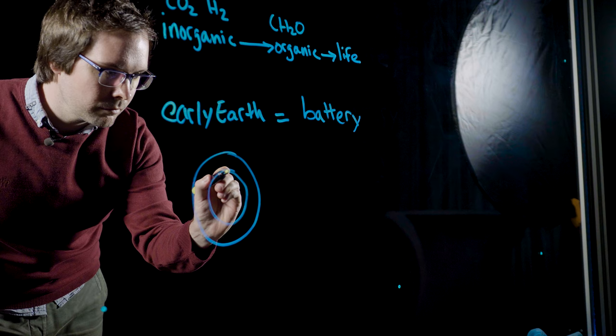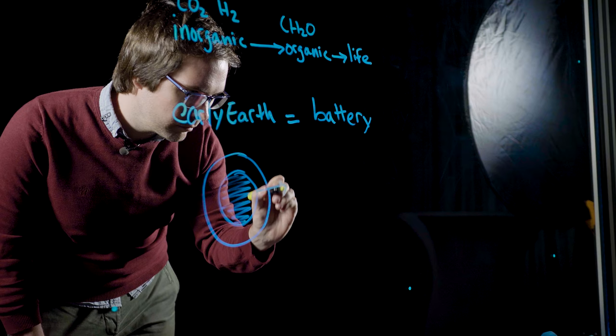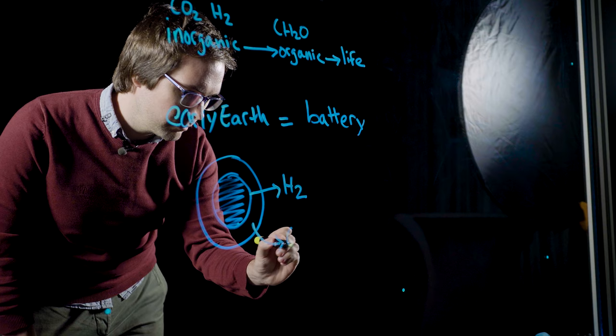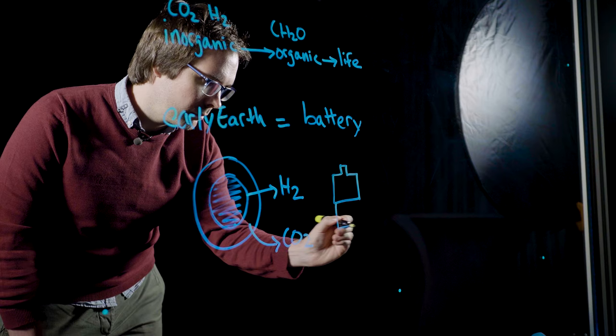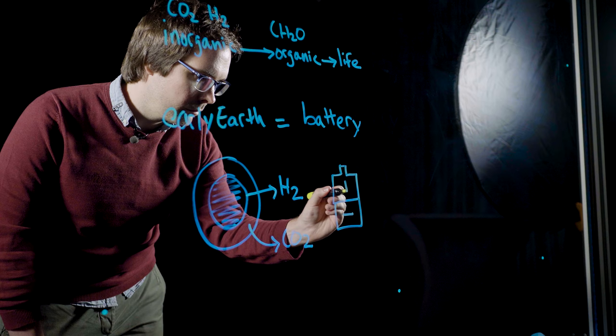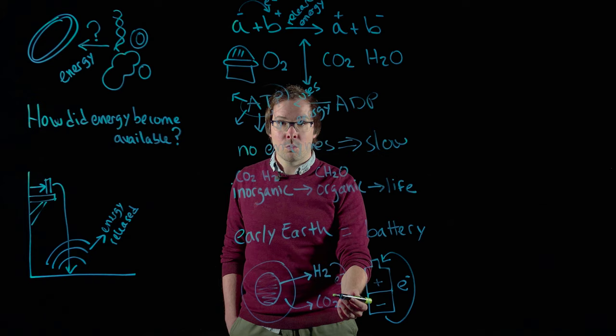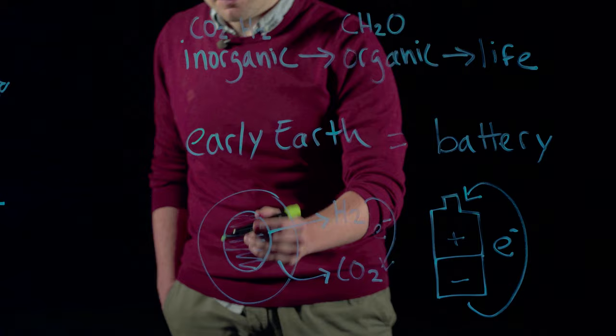Remember when I said that life needed a difference in states so that the energy can then be used? So as it happens, the early Earth was full of these places where two different states were one next to each other. In a sense, we could say that the early Earth was like one giant battery. We have the rocks that are full of chemicals that are rich in electrons, whereas the atmosphere and oceans are full of other chemicals that don't have that many, so that the electrons naturally want to hop from one to the other.